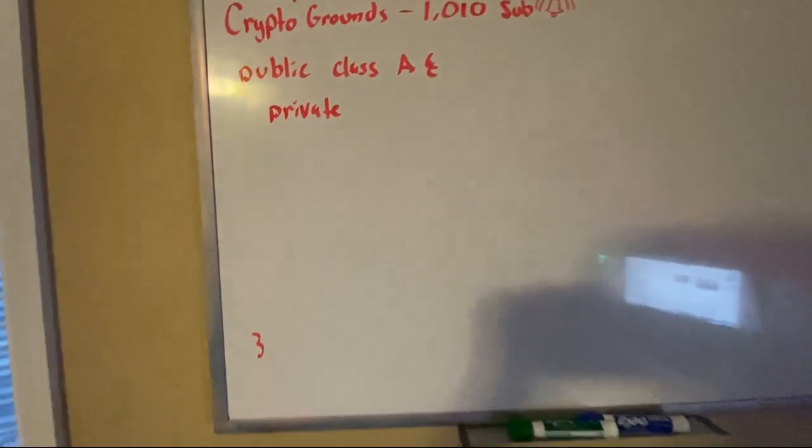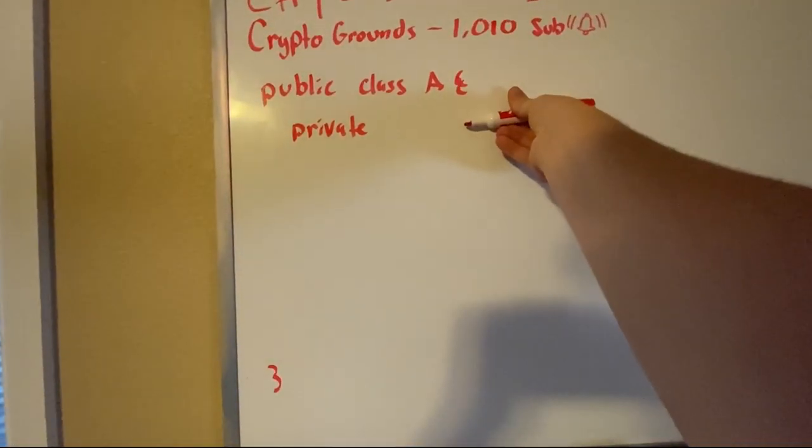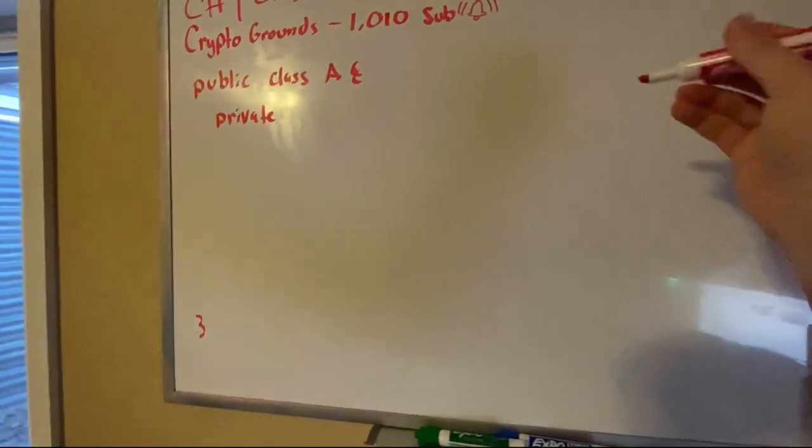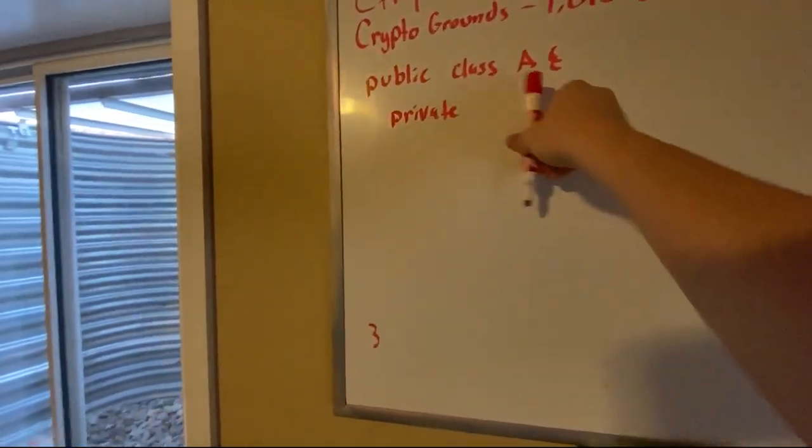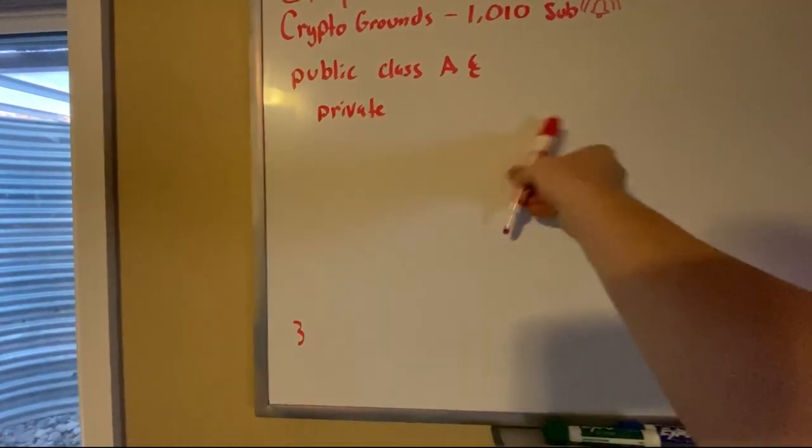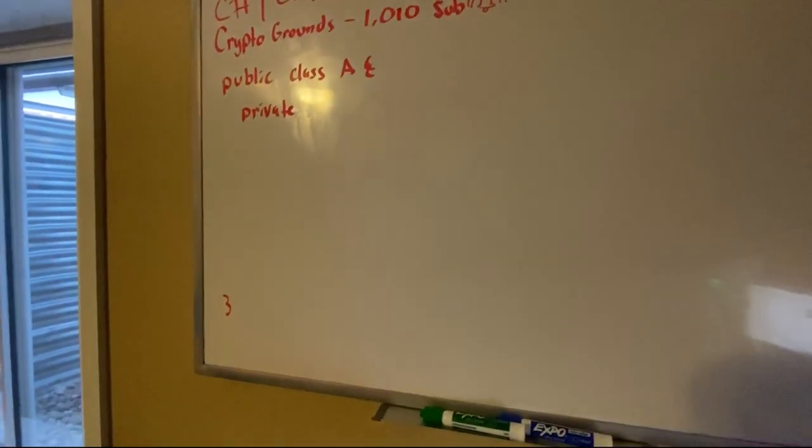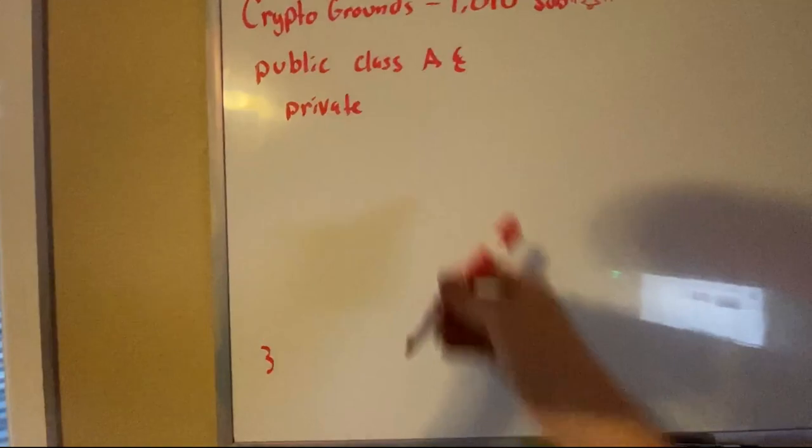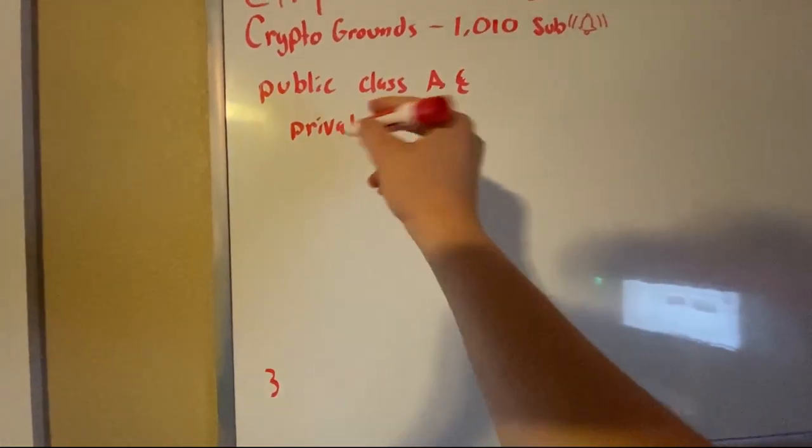As I explained in the last video, private can only be accessed inside this class. Of course you could do protected to make it so that you can do that in another class inside your project, but the most secure way is private.